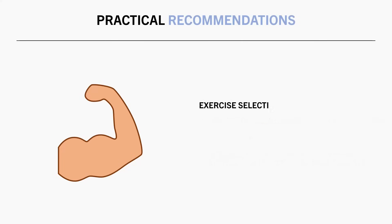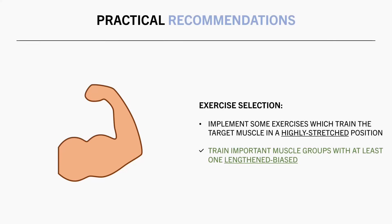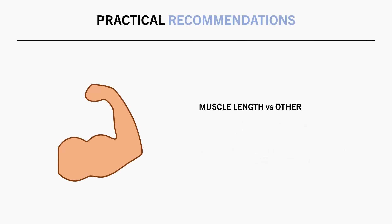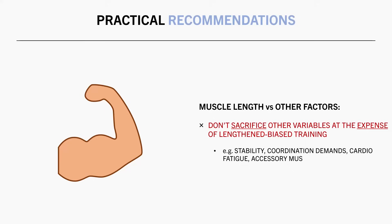In terms of exercise selection, it seems beneficial to train each muscle group in a near maximally lengthened state at least once throughout the week. Not every exercise needs to take the target muscle into a maximal stretch, but including some lengthened biased exercises in a training routine is likely to be beneficial for muscle growth. We also want to make sure we aren't taking lengthened biased training too far to the point where we are sacrificing other variables — other factors such as stability, coordination demands, cardio demands, and accessory muscles all influence the effectiveness of an exercise too.